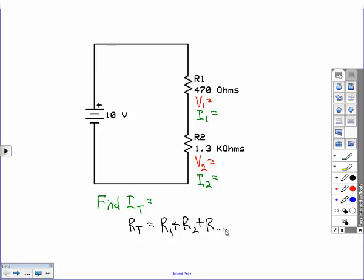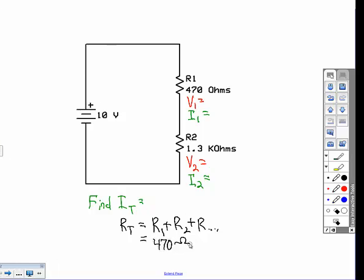So for our example, this is going to be 470 ohms plus 1,300 ohms for a total of 1,770 ohms or 1.77 kilohms.